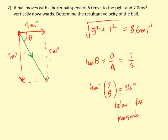Or you can also say it's 54 degrees clockwise from the 5 meters per second velocity.